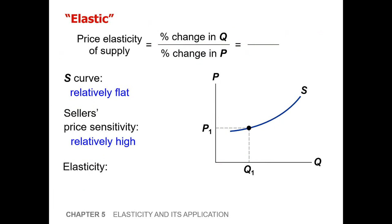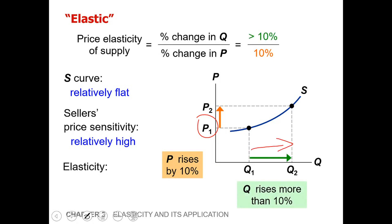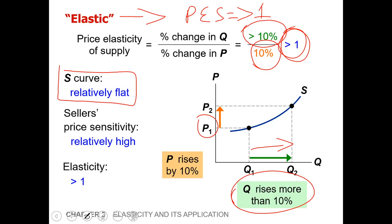The fourth case is the elastic supply curve. As the price level increases from P1 to P2 — a 10 percent increase — the quantity supplied increases significantly from Q1 to Q2, rising by more than 10 percent. So quantity changes by greater than 10 percent and price changes by 10 percent, giving a result always greater than one. The price elasticity of supply is greater than one. The supply curve is relatively flat, sellers' price sensitivity is relatively high, and elasticity is greater than one.